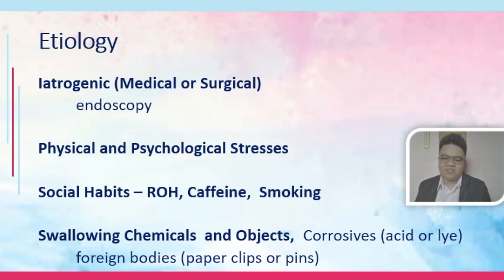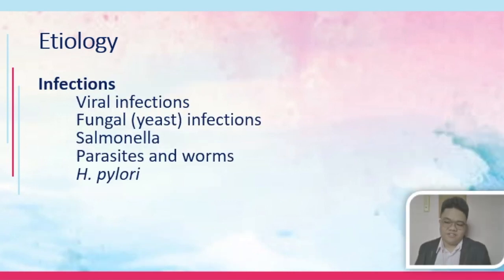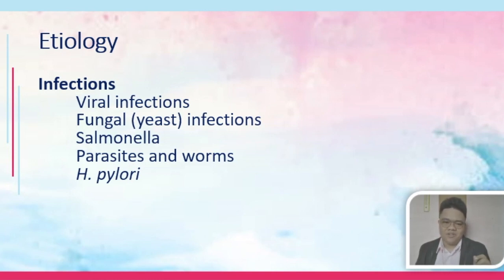Foreign objects such as paper clips or pins can also inflame the surfaces of your stomach. Infections from viruses, fungi, salmonella, parasites and worms, and most importantly helicobacter pylori, are among the most common causes of gastritis and peptic ulcer disease. These infections all lead to inflammation of the stomach. Viral infections require antivirals, fungal infections require antifungals, and H. pylori requires antibiotics.